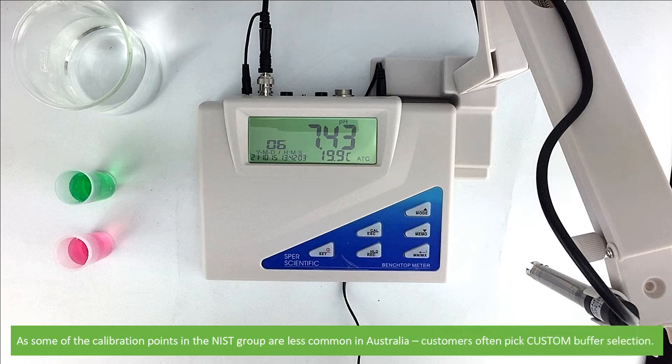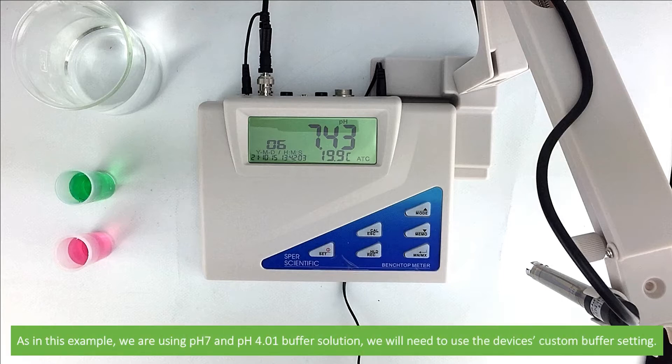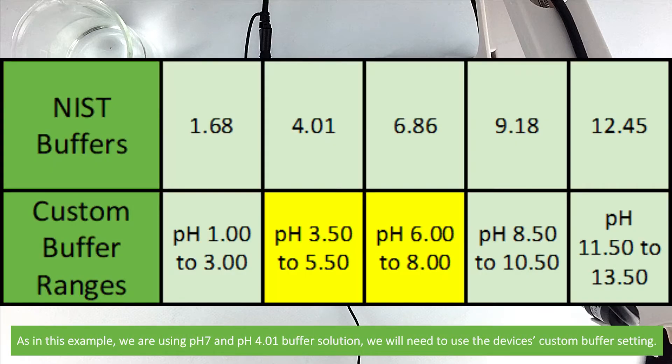As some of the calibration points in the NIST group are less common in Australia, customers often pick custom buffer selection. As in this example, we're using pH 7 and pH 4.01 buffer solution, we'll need to use the device's custom buffer setting.